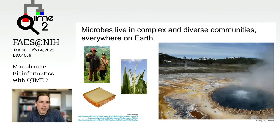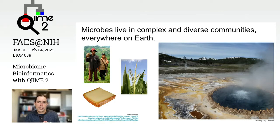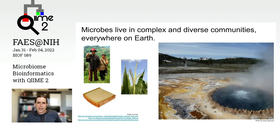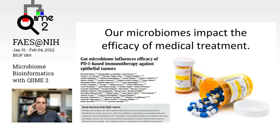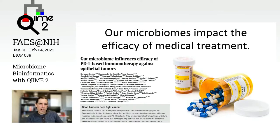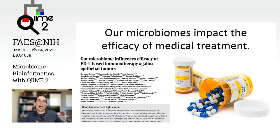This technology has also helped us understand that microbes live in complex and diverse communities basically everywhere on Earth. Almost without fail, wherever we collect 16S ribosomal RNA sequences, we collect sequences from many different organisms — in and on our bodies, in plants, in foods, and in what we think of as extreme environments such as hot springs in Yellowstone National Park. We're now beginning to use this knowledge in human health, environmental science, and many other fields. For instance, our microbiomes impact the efficacy of medical treatment.